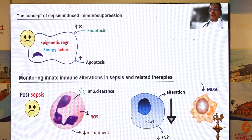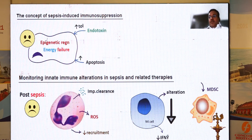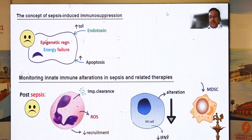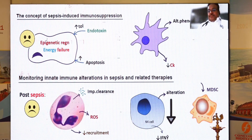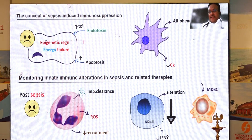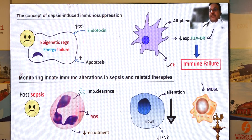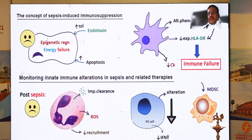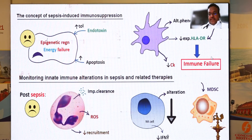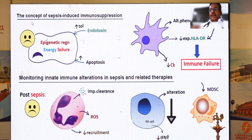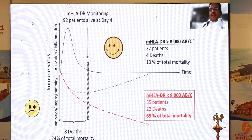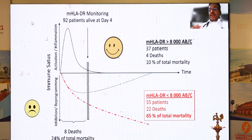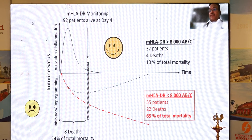Myeloid-derived suppressor cells also get more expressed in sepsis-related immunosuppression. The dendritic cells have an altered phenotype. Scientists have looked at HLA-DR expression on monocytes as an indicator of immune function. There are 15 studies which have looked at HLA-DR expression as a good indicator of the immune suppression state.